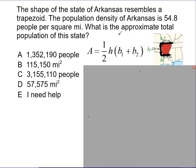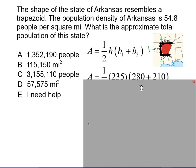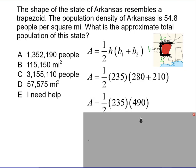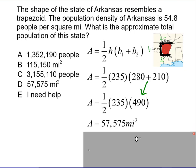Now I have my trapezoid formula, so let's substitute in the values we just determined. The area equals one half times 235 times 280 plus 210. My order of operations tells me to do the addition inside the parentheses first, so 280 plus 210 gives me 490. Now I do my multiplication and I get 57,575 square miles.